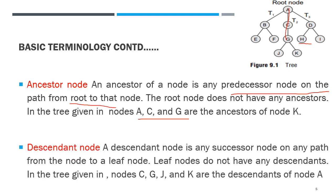What is a descendant node? The descendant node is any successor node on any path from a node to a leaf node. Normally leaf nodes are descendants. In the given tree, nodes C, G, J, and K are descendants of A.